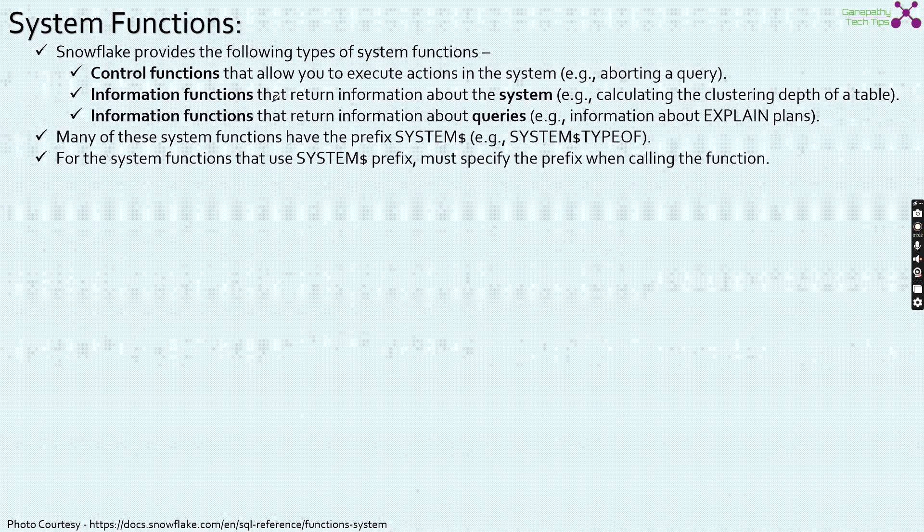Information functions are again further classified into two types. One type of information function will return information about the system, for example, calculating the clustering depth of a table. We already discussed this in the micropartitions video. Another one returns information about queries, for example, information about explain plans.